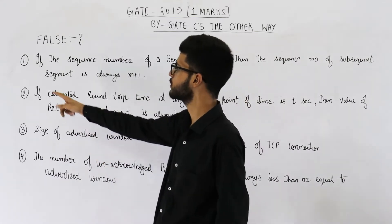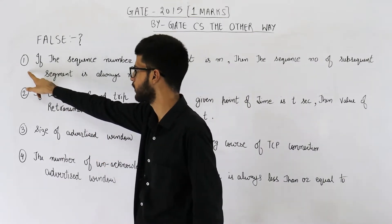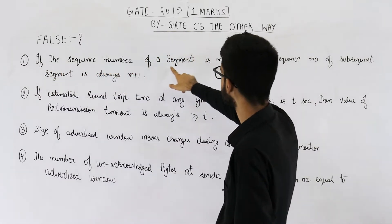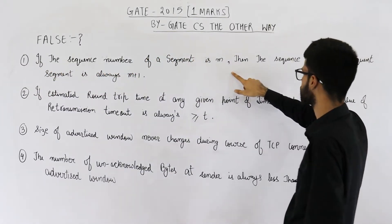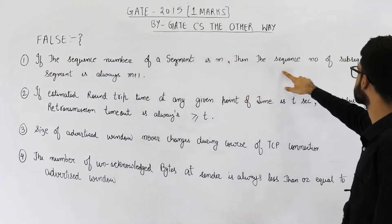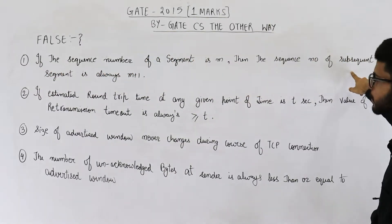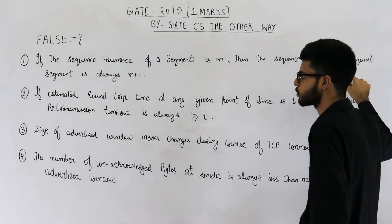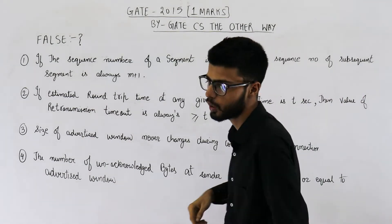Let us start with statement number 1. It says: if the sequence number of a segment is m, then the sequence number of the subsequent segment is always m plus 1. This is false.